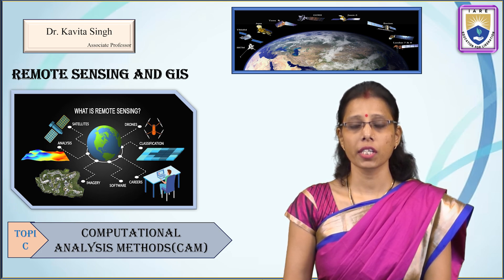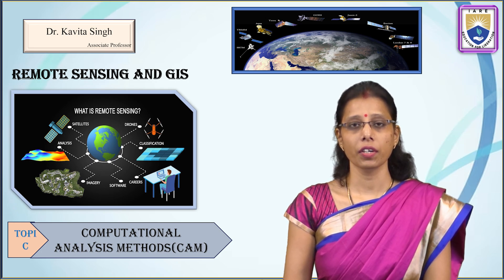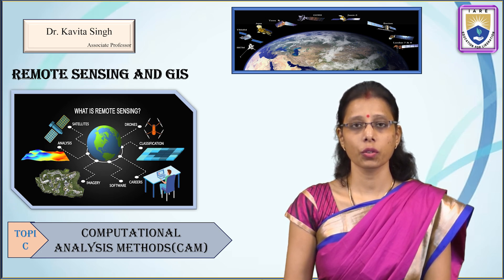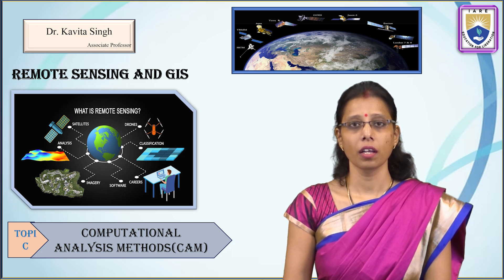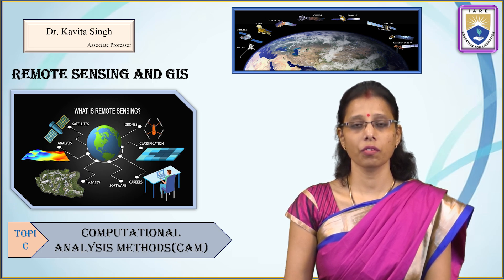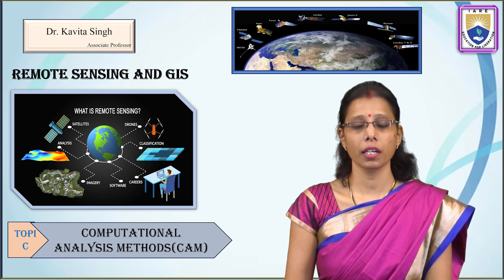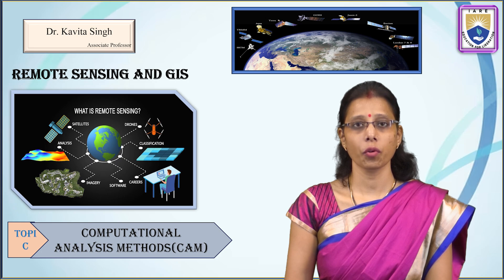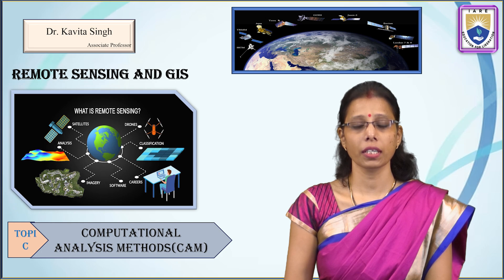In the previous lecture, we discussed visual analysis methods and different types of visual analysis methods: overlay methods, buffering — all discussed with the vector data. When we talk about visual analysis methods, we are talking about spatial analysis, which we can do only on vector data using point, line, and polygon.